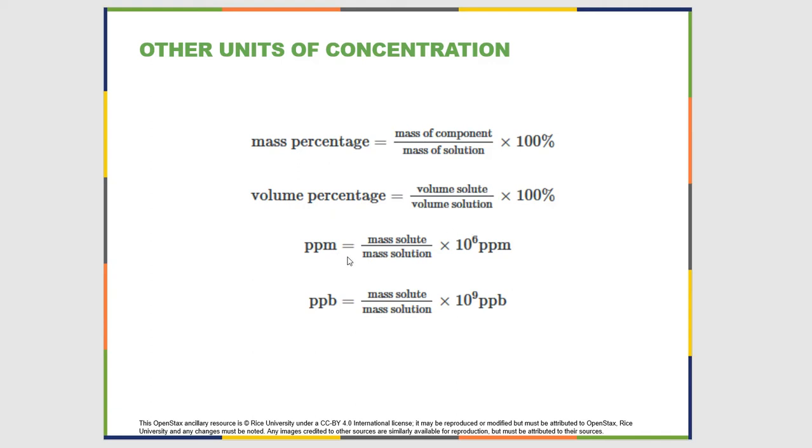Parts per million is mass of solute over mass of solution—the part divided by the whole—times 10^6. Ten to the six being a million. Parts per billion is the mass of the solute divided by the mass of the solution times one billion.